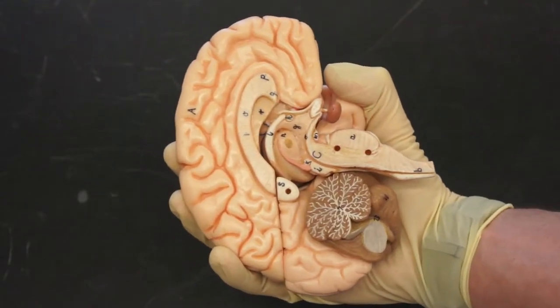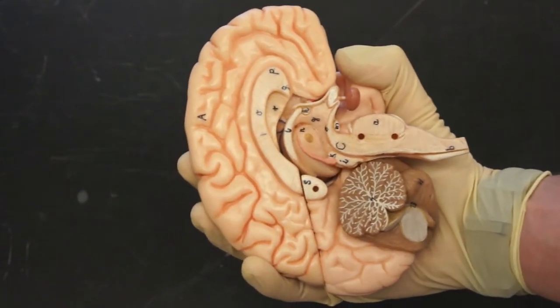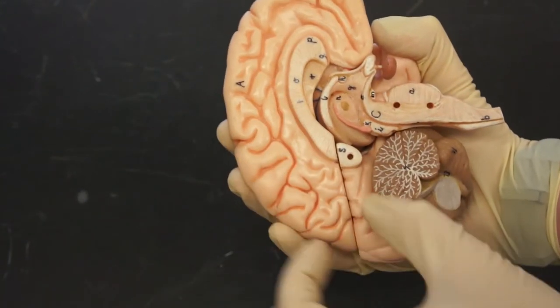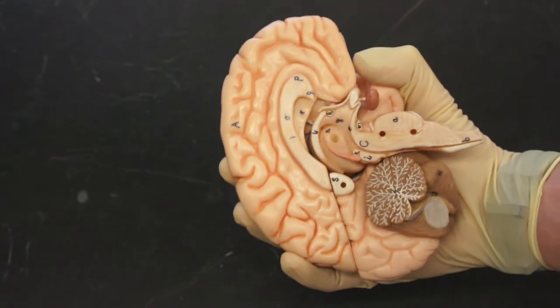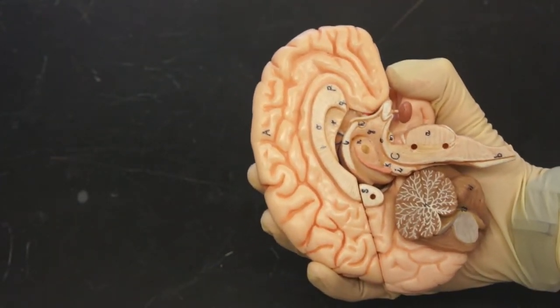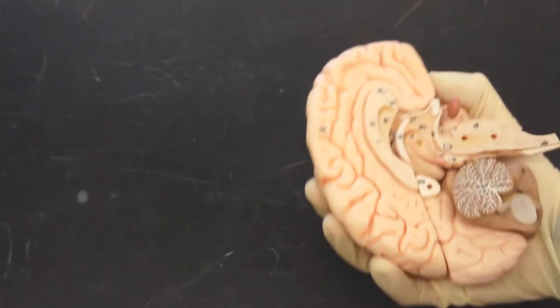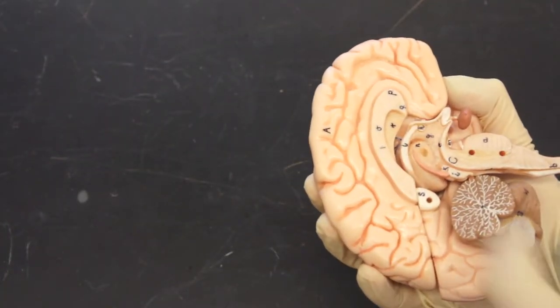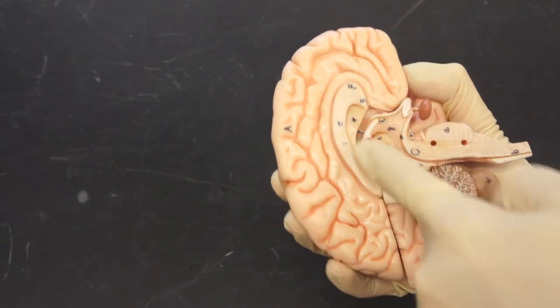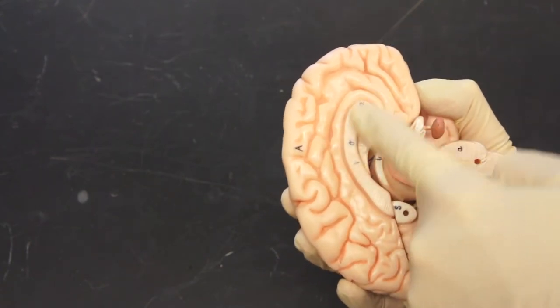Here is the sagittal section of the brain, and the cerebrum is this outside layer here. It's the telencephalon, and its cerebral hemisphere is one half. So this right here is one cerebral hemisphere. And we have the corpus callosum, that's this structure right here, sending nerve impulses from each side of the brain.